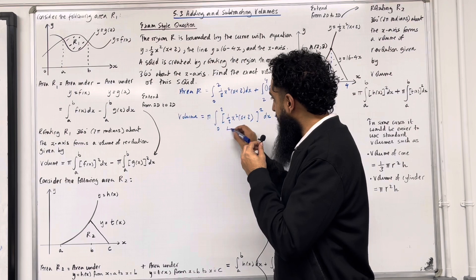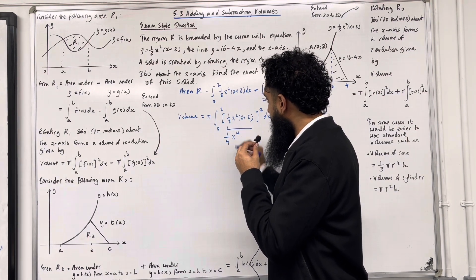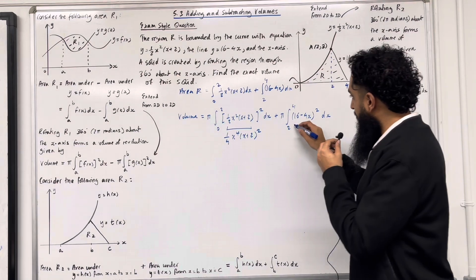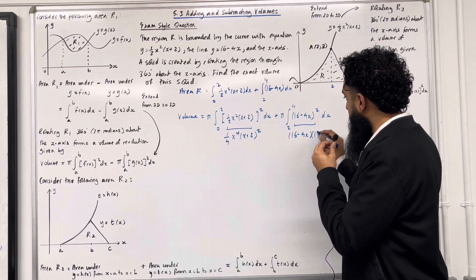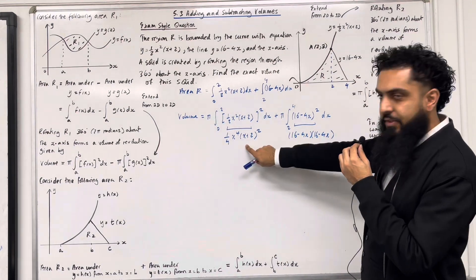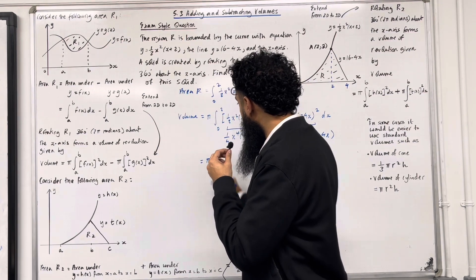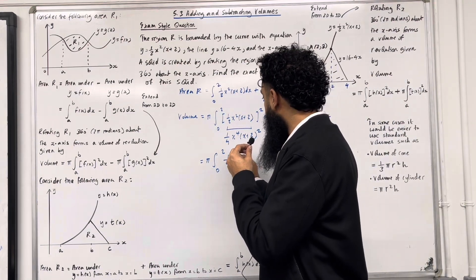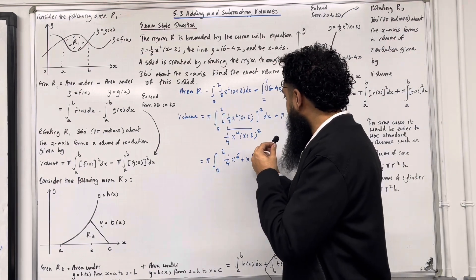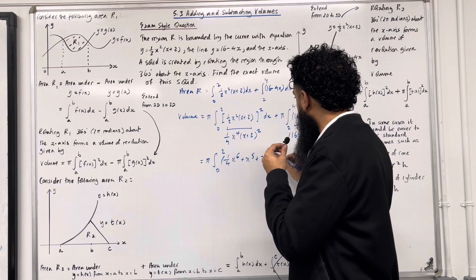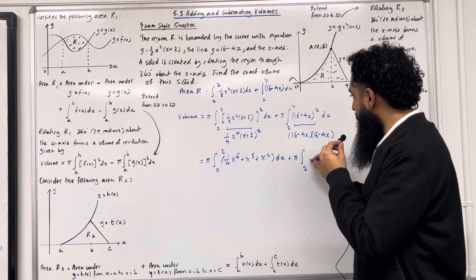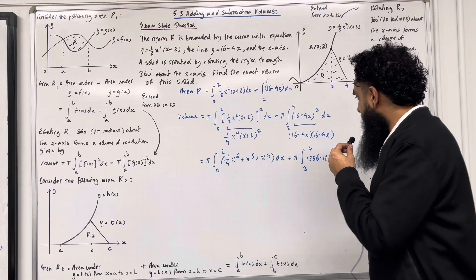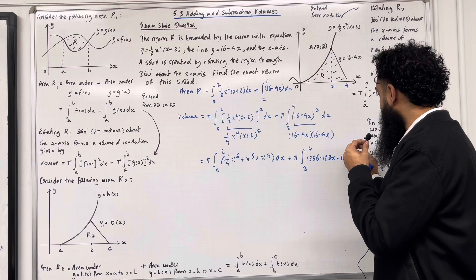Squaring the first expression gives ¼x⁴ multiplied by (x + 2)². For the second expression, opening into double brackets and expanding gives 256 − 128x + 16x². So we have π multiplied by the integral from 0 to 2 of (¼x⁶ + x⁵ + x⁴) dx, plus π multiplied by the integral from 2 to 4 of (256 − 128x + 16x²) dx.